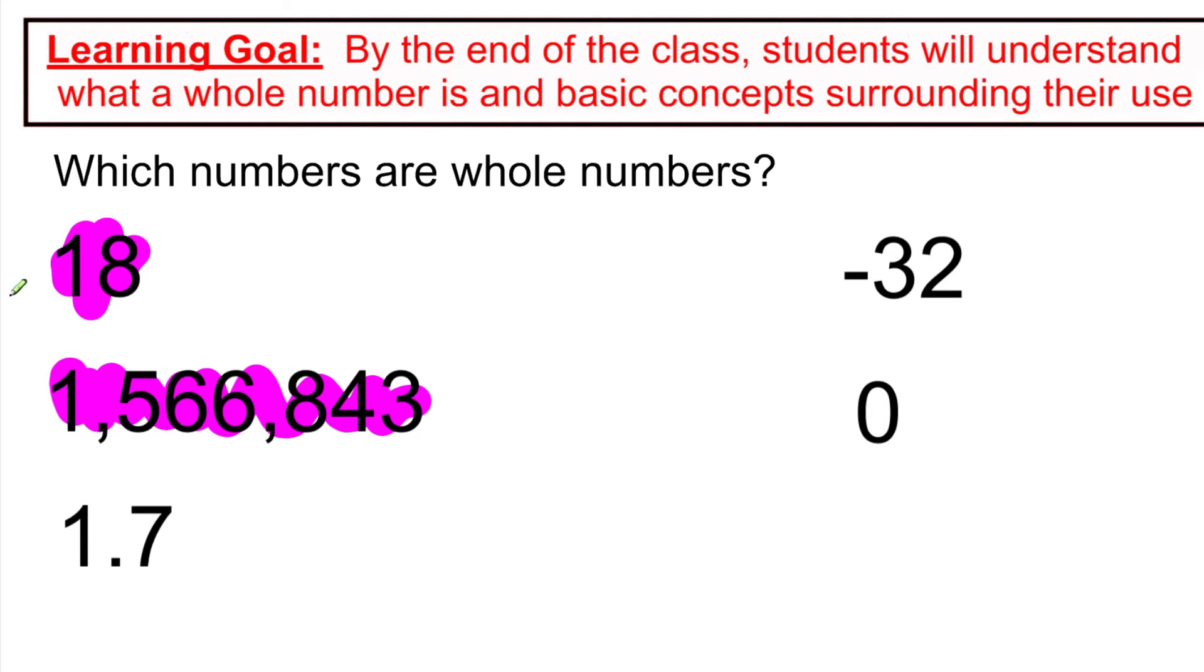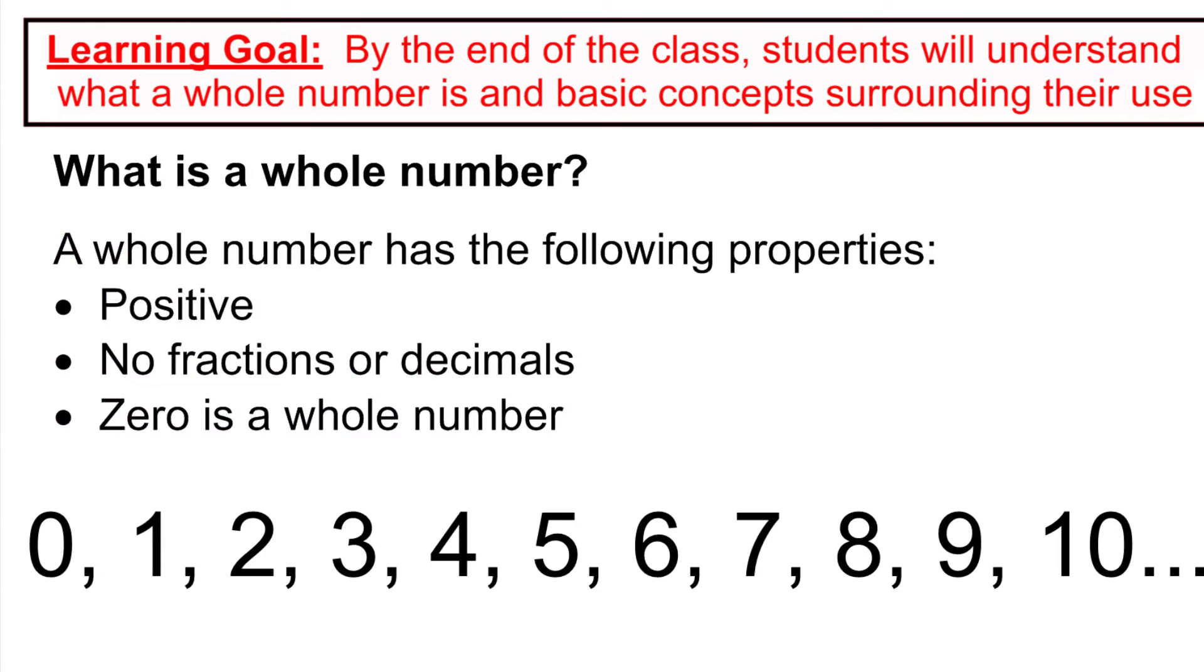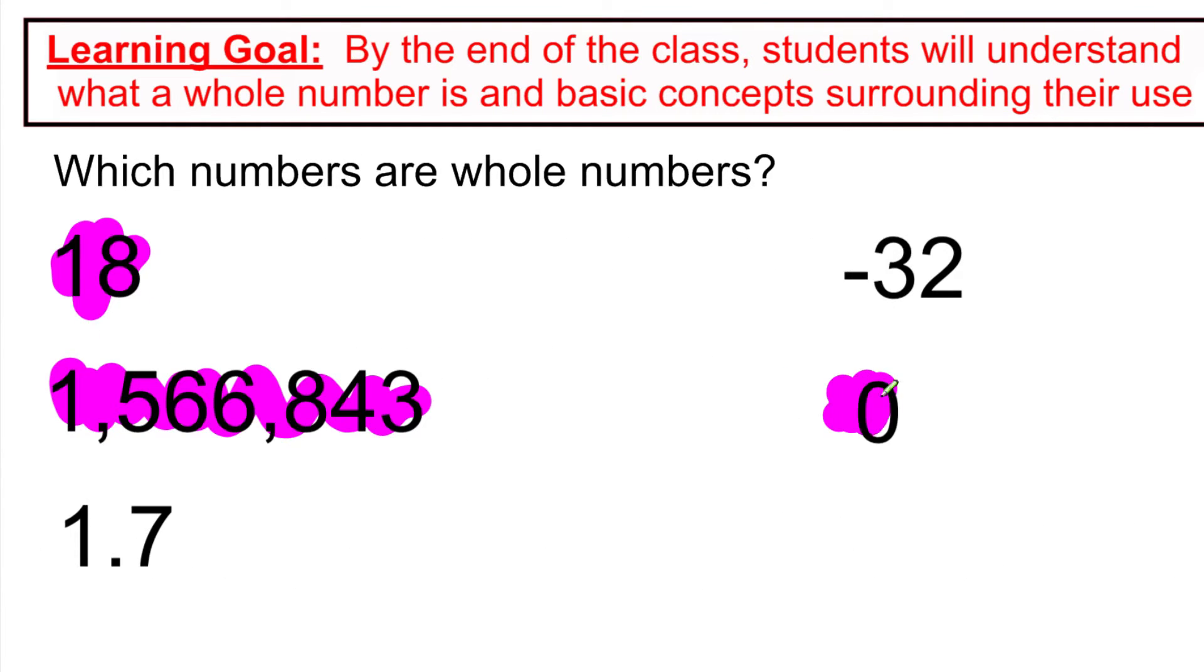Zero, well the list specifically said, let's include zero as a whole number, so we're going to say yes. And 1.7, no it is not, it is not because it is a decimal. So these three numbers, 18, 1,566,843, and zero are my whole numbers.